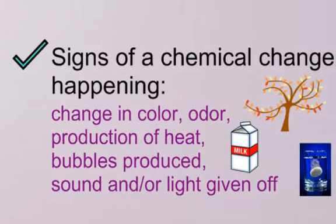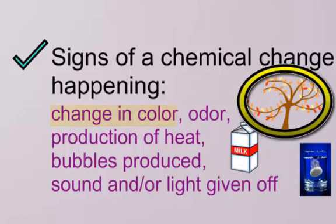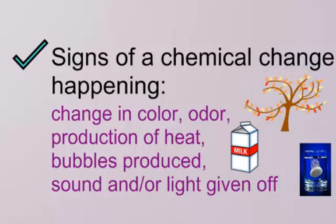Signs that a chemical change is happening would be like a change in color. So when you see the leaves changing in the fall, that's a chemical change happening in the tree. Nutrients are no longer being provided to the leaves. You get different pigments are turned off. So you get a chemical reaction happening in the leaves.